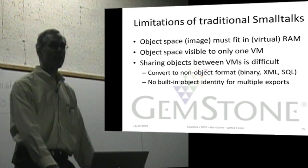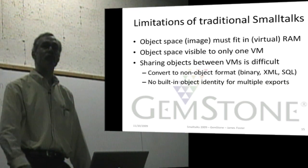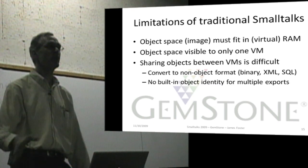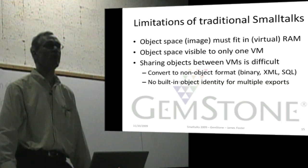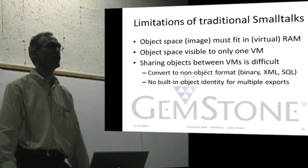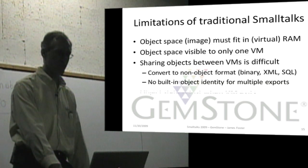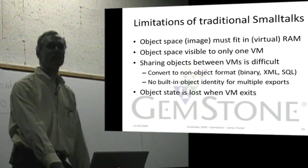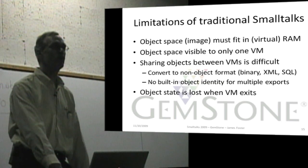And even with the binary fileout, if you file it in — if you file out two different routes that reference the same object and then file back in — you will have two copies. So we end up not preserving object identity when we go out through an external format. That's a challenge, that's a problem. And if the VM exits without you saving an image, then you lose the object state. These are some limitations of traditional Smalltalks.